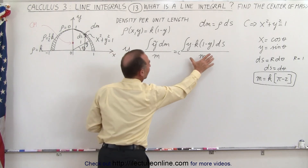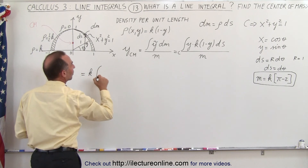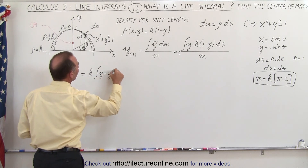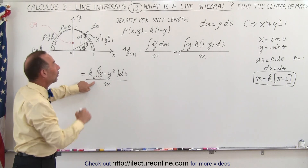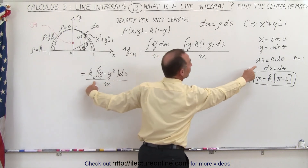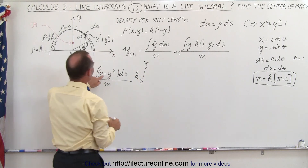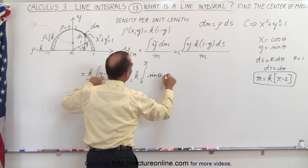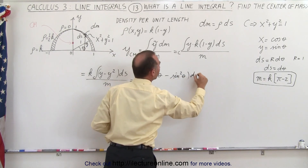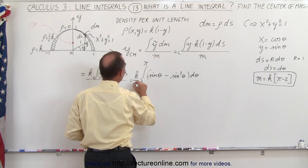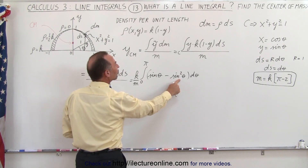So the equation now becomes: k times the integral of (y minus y²) times ds over the mass — still a line integral. Converting to parametric form, this equals k times the integral from 0 to pi of (sine θ minus sine²θ) dθ, all divided by the mass, written as k divided by m. We know how to integrate sine, but for sine squared we need to convert it using the identity: sine²θ equals one-half times (1 minus cos 2θ).